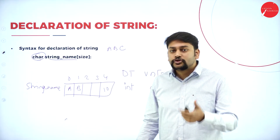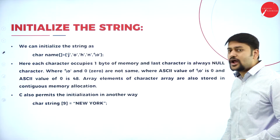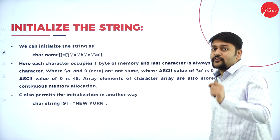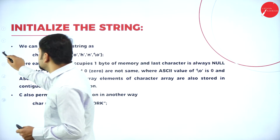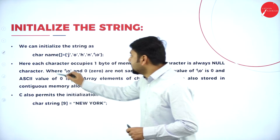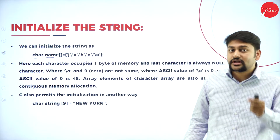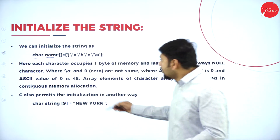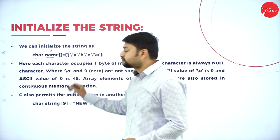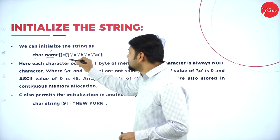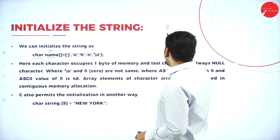The syntax to declare a string is: use the data type char in the array. We understood how to declare it. Now let's understand how to initialize it. We have two methods. The first method uses flower brackets. Observe: char is the data type, 'name' is the array name, followed by square brackets, then the assignment operator equals, then flower brackets.